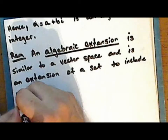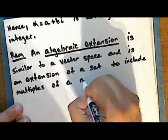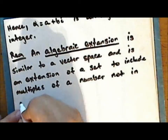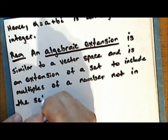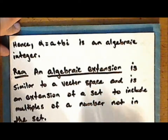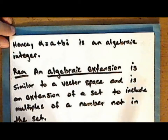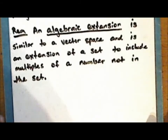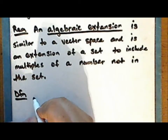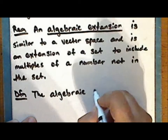Now remember, i squared is the number negative one, and so we have alpha squared minus 2 times a times alpha plus a squared plus b squared equals zero. And so the number alpha is a solution to the monic polynomial equation x squared minus 2 times a times x plus a squared plus b squared equals zero. And this polynomial equation has integer coefficients.